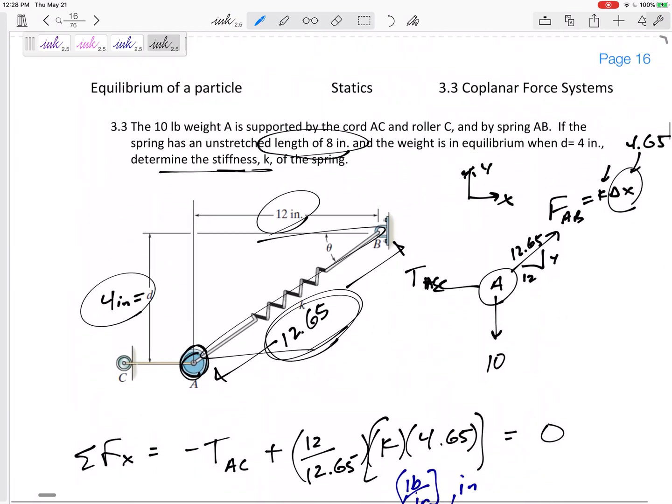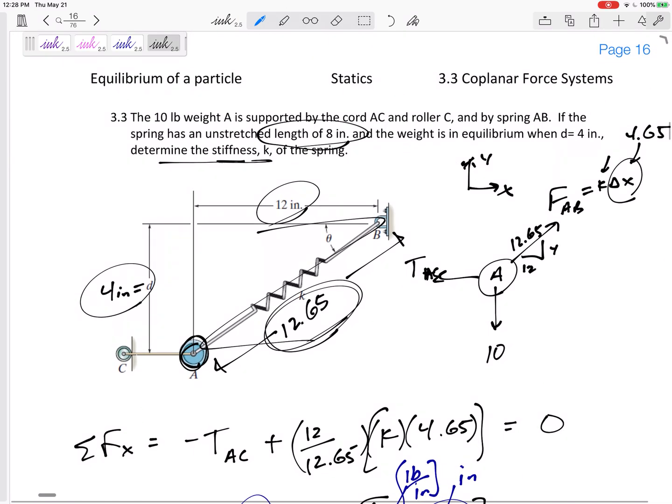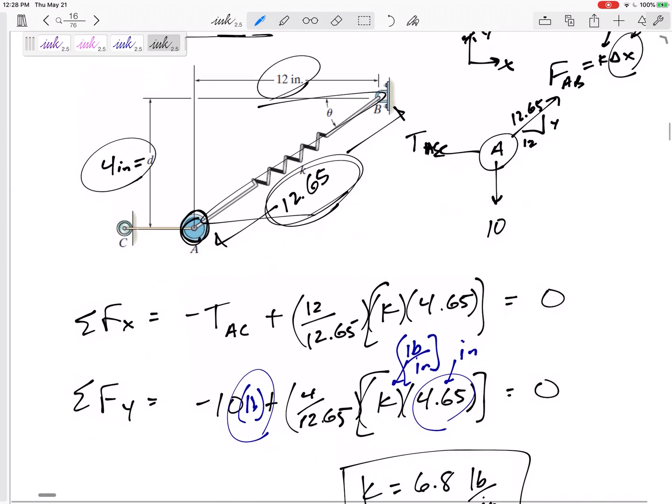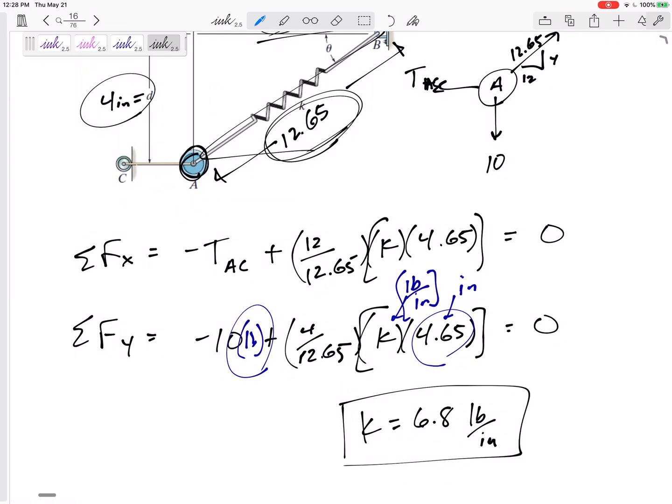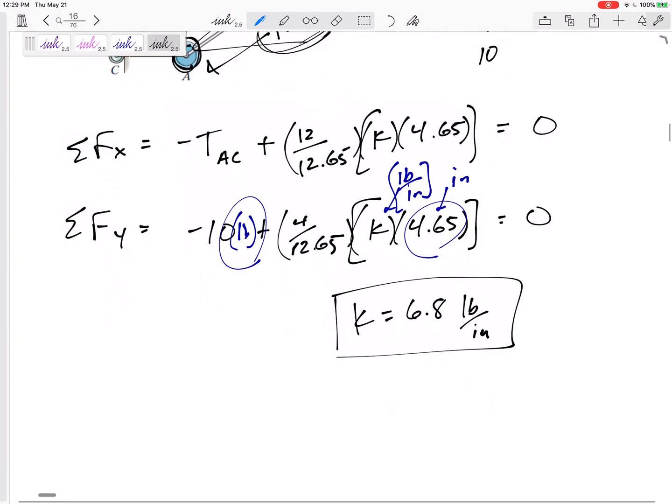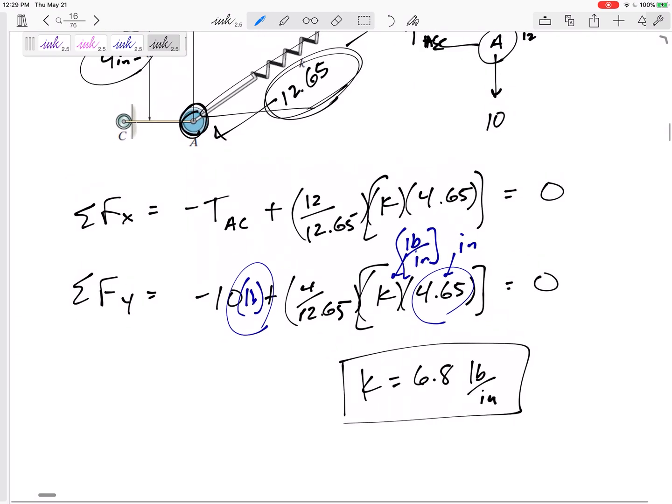So let's take a step back and look back over it. We do a free body diagram. Force in the spring is K delta X. Our equations, equilibrium equations, equal to zero in order to solve for K 6.8 pounds per inch.